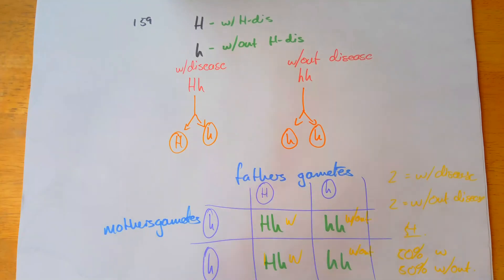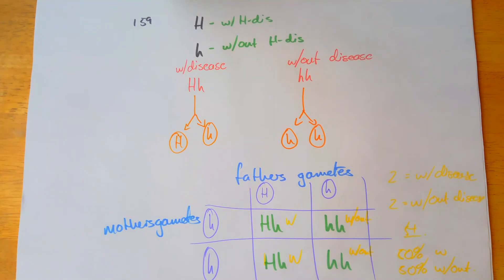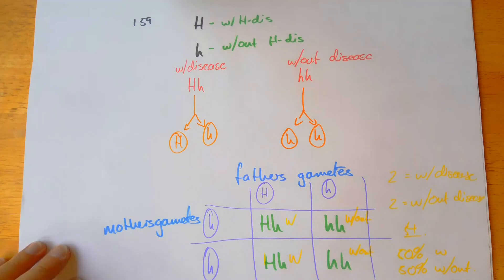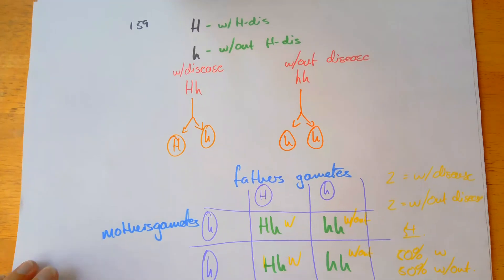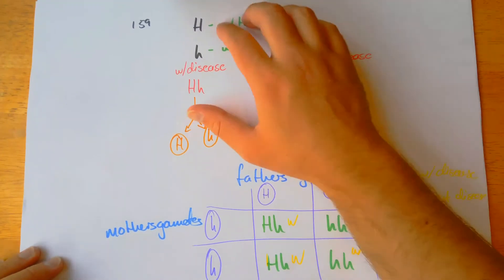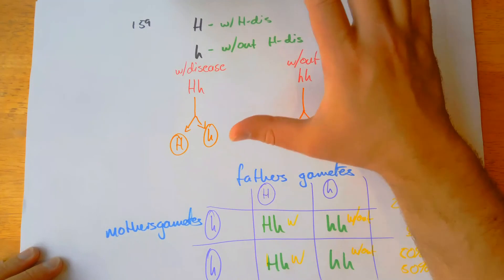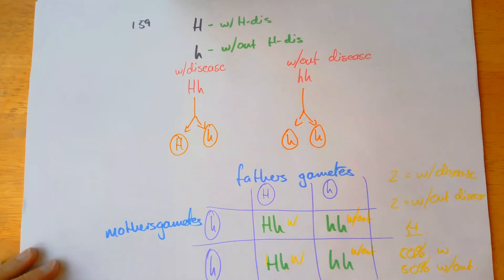That won't be very different from stuff you've done at GCSE — just one thing to look out for: this dominant allele is responsible for the disease. At GCSE it was usually sickle cell or something else that was recessive.